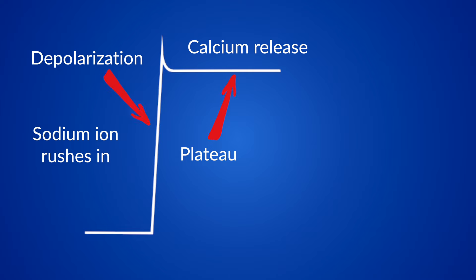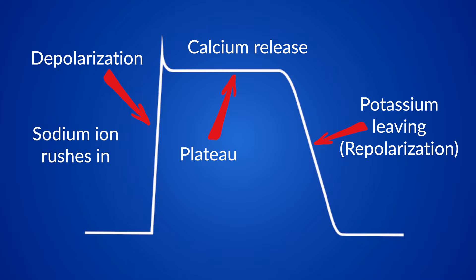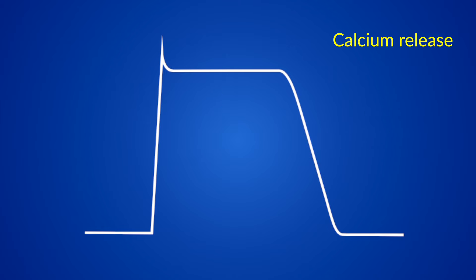At that point, calcium gets pumped back into the sarcoplasmic reticulum, and that's when potassium ions leave the cell and the membrane potential is restored to its resting state. Here's the crucial part: calcium release is the thing that triggers muscle contraction. As calcium starts getting released, the muscle cells begin contracting and the tension in the cardiac muscle increases. Once calcium starts being pumped back into the sarcoplasmic reticulum, the muscle cells start relaxing and return to their original state.